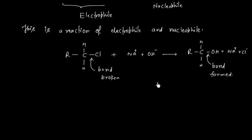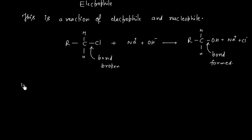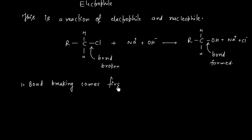There are three possibilities. The first possibility is that bond breaking comes first, and then the bond forms.